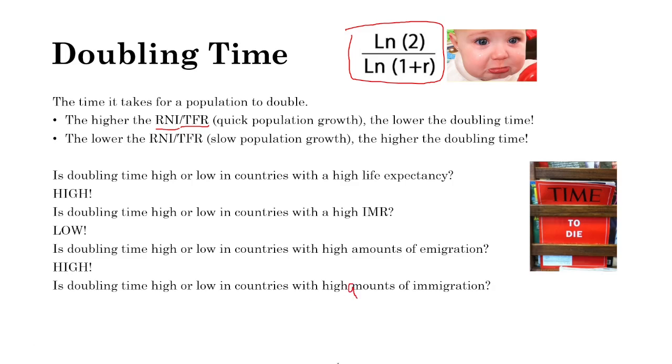Countries with high amounts of immigration are gaining people, so they're able to double their population faster, resulting in a low doubling time.